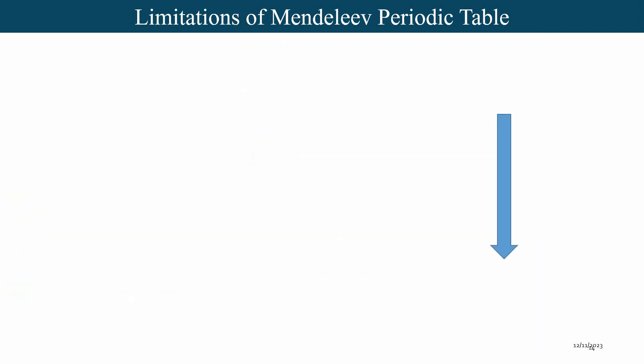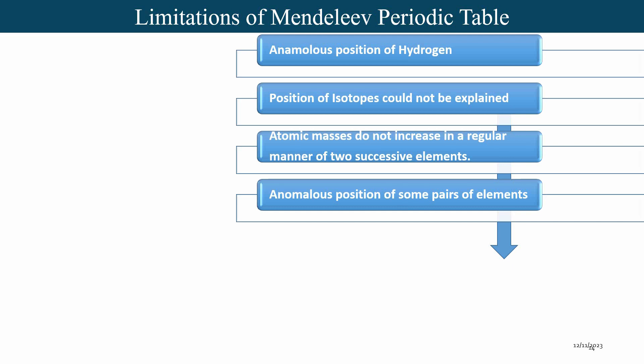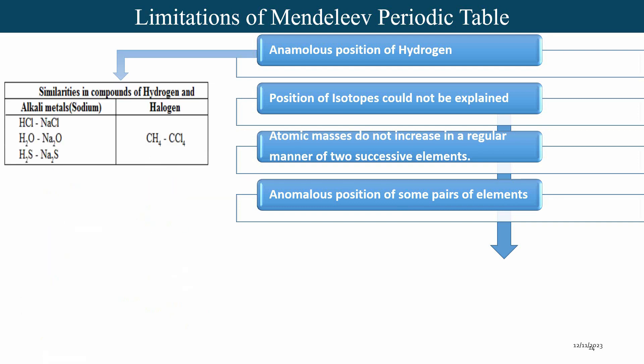However, Mendeleev's periodic table also suffered from limitations, for which it was criticized. These limitations include: first, the anomalous position of hydrogen. If you look at the properties of hydrogen, they resemble both alkali metals and halogens. Just like alkali metals, hydrogen forms compounds with halogens, oxygen, and sulfur. And just like halogens, it forms similar compounds. So the position of hydrogen was anomalous, and Mendeleev was not able to justify it.